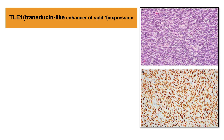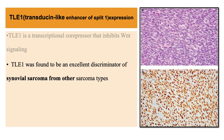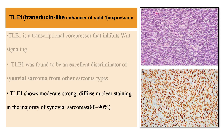TLE1 (transducin-like enhancer of split 1) is one of four members of the TLE gene family encoding transcriptional co-repressors homologous to the Drosophila gene, involved in control of hematopoiesis, neural differentiation, and terminal epithelial differentiation. TLE1 was found to be an excellent discriminator of synovial sarcoma from other sarcoma types, showing moderate to strong diffuse nuclear staining in the majority of synovial sarcomas.